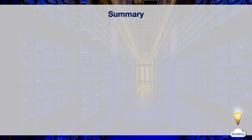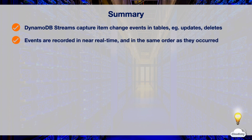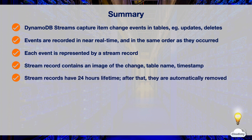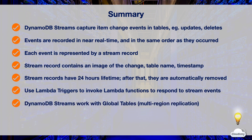In this episode, we learned about DynamoDB Streams. DynamoDB Streams capture data modification events in DynamoDB tables — new items, updates, and deletions — recorded in near real time. Each change event is represented by a stream record containing an image of the changed item, the table name, event timestamp, and metadata. Stream records have a lifetime of 24 hours and are then automatically removed. You can use Lambda triggers to automatically respond to stream events. Global tables use streams behind the scenes to replicate data across multiple regions.